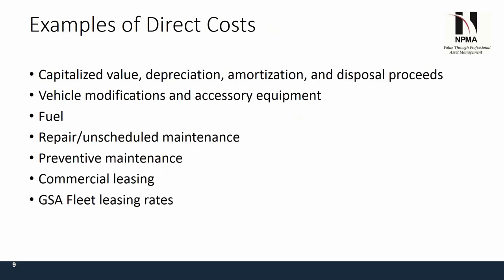Examples of direct costs include capitalized value and depreciation. If you're not capturing depreciation on your vehicle — especially on your owned fleet — you should be capturing depreciation, amortization, and disposal proceeds. Disposal proceeds are important because once you've depreciated that vehicle, capturing back the proceeds from disposal reduces the depreciation over that term. Vehicle modifications, accessory equipment, fuel, repairs, unscheduled maintenance, preventative maintenance, commercial lease costs, and GSA fleet leasing rates are all direct costs.